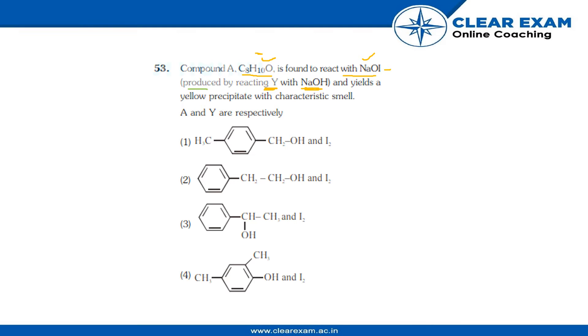By this line we can clearly see that after Y and NaOH, NaOI is produced. Y is obviously I2, and it is given in all four options. We have to tell A.